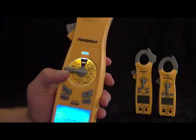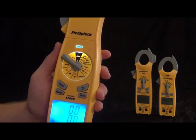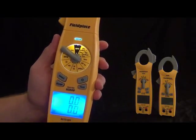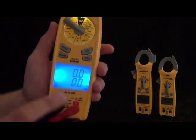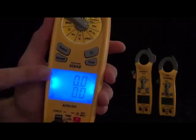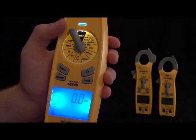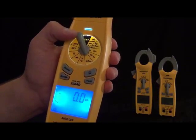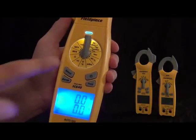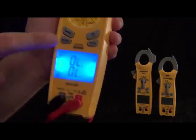Then we got microamps DC for flame rectification. We still have the K-type thermocouple probe and temperature. It'll display both Fahrenheit and Celsius at the same time, depending on whatever you like. Then we got a diode tester, ohms, microfarads, non-contact voltage, and continuity.